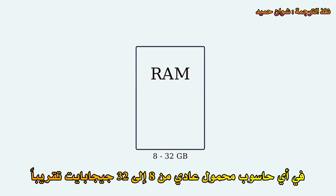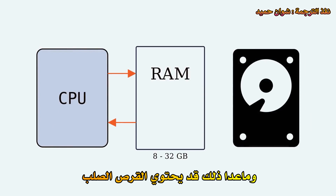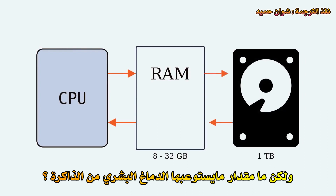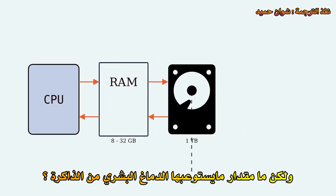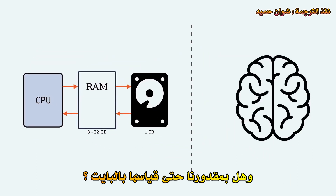The amount of random access memory, RAM, in a typical laptop is probably around 8 to 32 gigabytes. That's the part that directly interacts with the CPU. Aside from that, your hard disk might have another terabyte or so of memory. But how much memory do you — that's to say, the human brain — have? And can we even measure it in bytes?